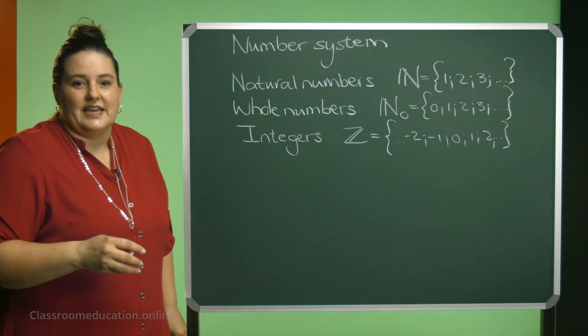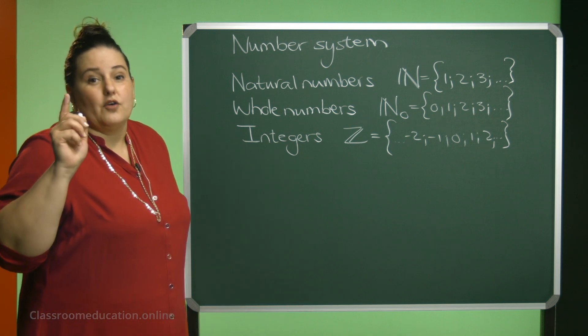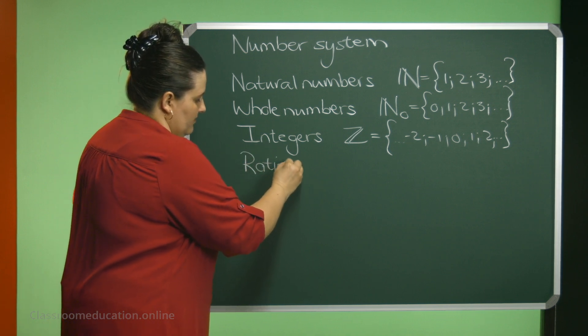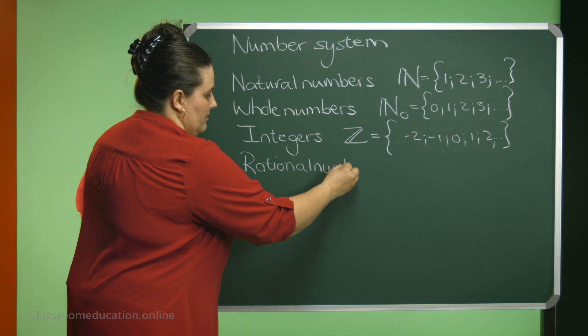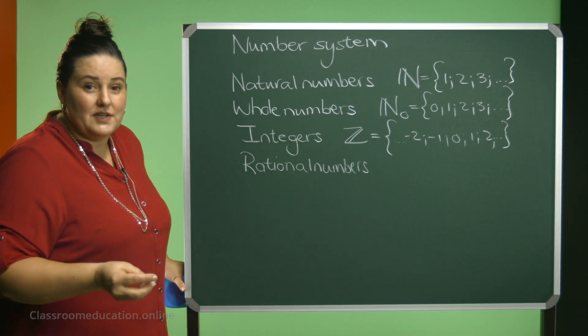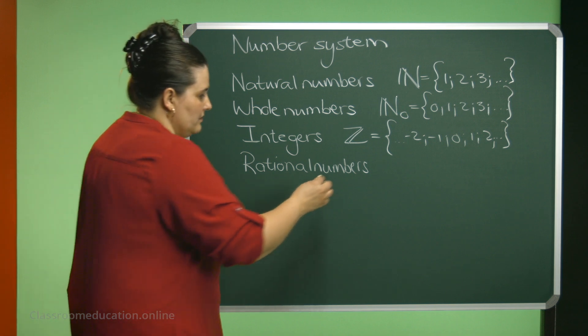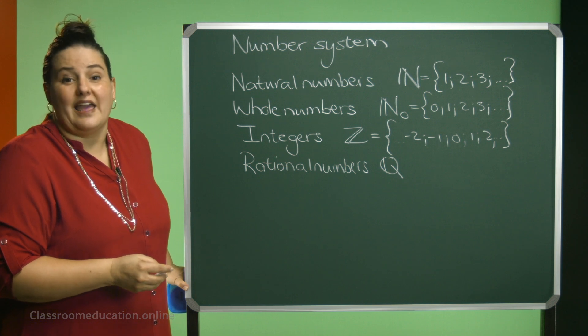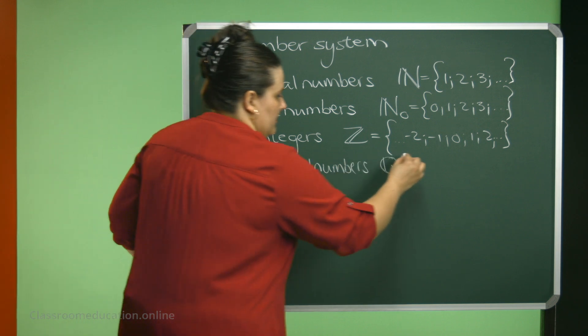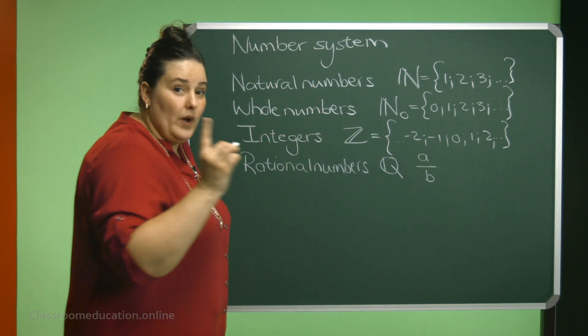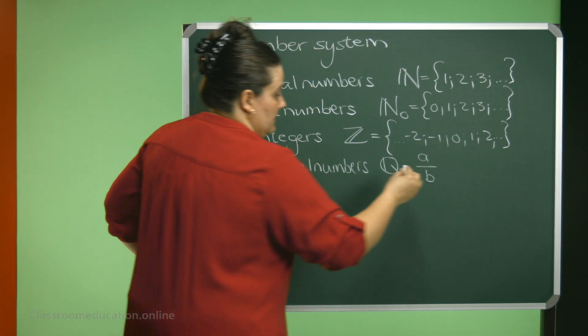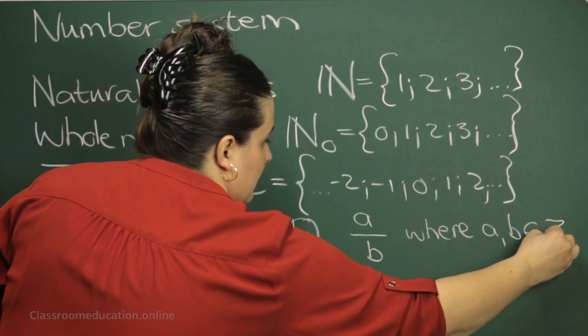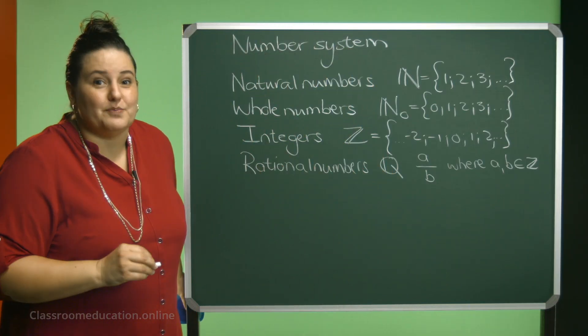The next set of numbers that we can get are the rational numbers. Rational numbers, the symbol for that is a Q. And rational numbers are numbers that can be written as a fraction, A over B, where A and B must be integers, but B may not be zero.